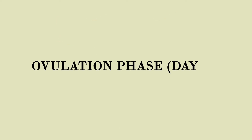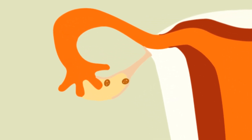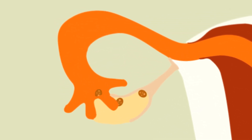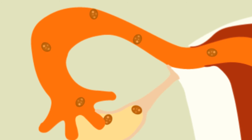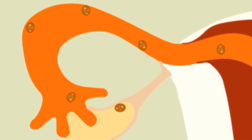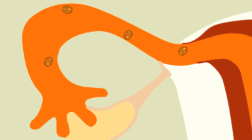Ovulation phase, day 14. On the fourteenth day of the cycle, the pituitary gland secretes a hormone that causes the ovary to release the matured egg cell. The released egg cell is swept into the fallopian tube by the cilia of the fimbriae. Fimbriae are finger-like projections located at the end of the fallopian tube close to the ovaries, and cilia are slender hair-like projections on each fimbria.